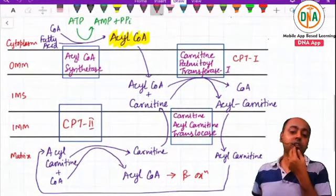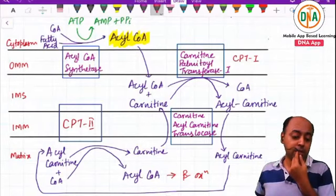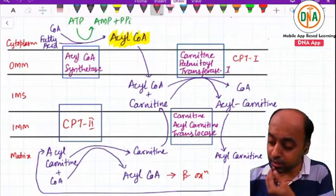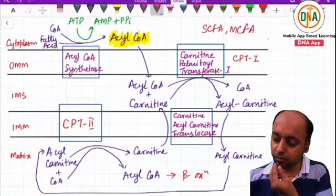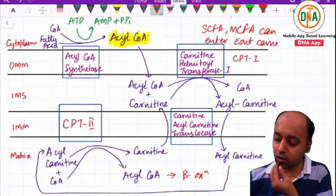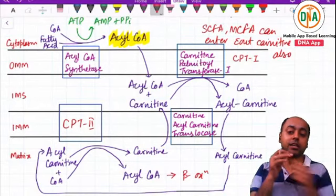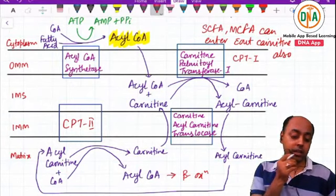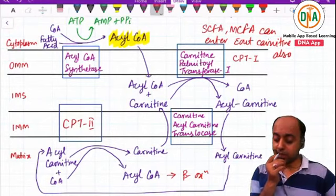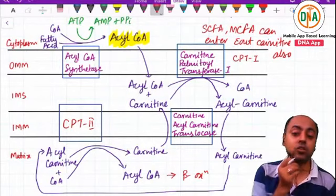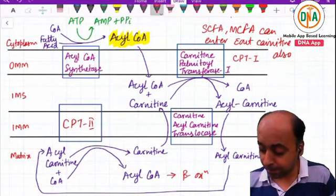This is how the activation and transport of the fatty acid into the matrix occurs. The inner mitochondrial membrane is not readily permeable, so we need a specific transport mechanism for the fatty acid, particularly for the long chain fatty acid. The small chain and medium chain fatty acids can enter without carnitine, but carnitine is critical for the long chain fatty acid — without carnitine, the long chain fatty acid cannot enter the matrix.